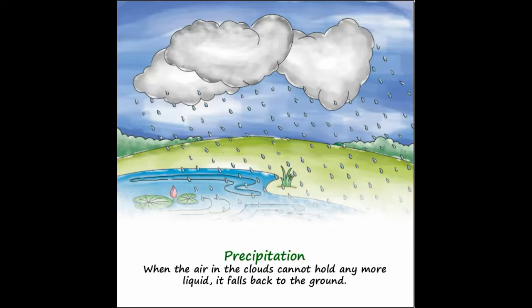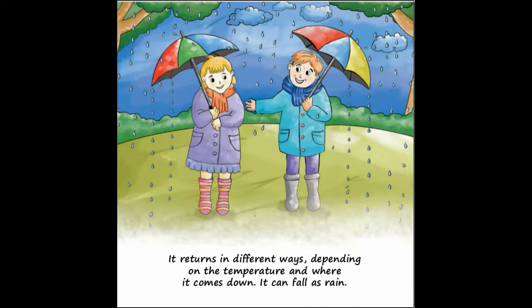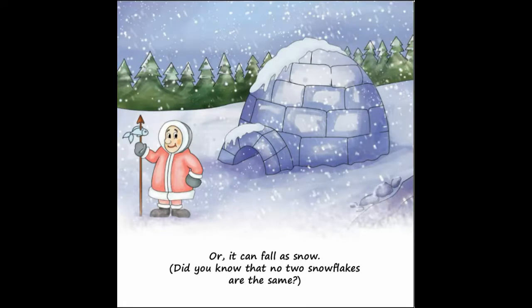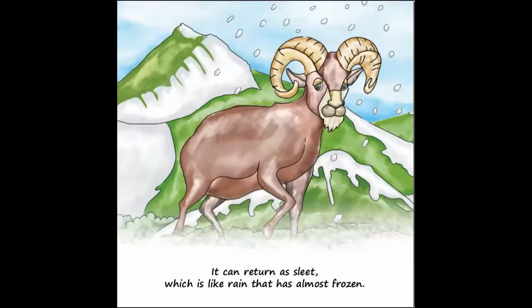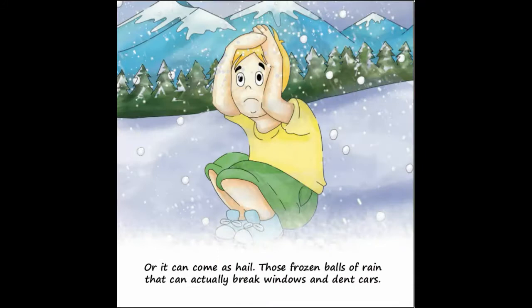Precipitation. When the air in the clouds cannot hold any more liquid, it falls back to the ground. It returns in different ways depending on the temperature and where it comes down. It can fall as rain or it can fall as snow — did you know that no two snowflakes are the same? It can return as sleet, which is like rain that has almost frozen. Or it can come as hail, those frozen balls of rain that can actually break windows and dent cars.